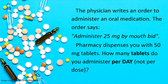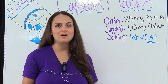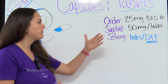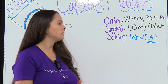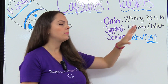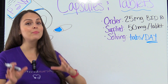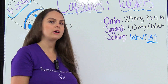Our next problem says the physician writes an order to administer an oral medication. The order says administer 25 milligrams by mouth BID. Pharmacy dispenses you with 50 milligram tablets. How many tablets do you administer per day — not per dose? The physician ordered 25 milligrams twice a day — that's what BID means — by mouth, and we're supplied with 50 milligram tablets. Make sure you pay attention to that part of the problem, because if you just solve for tablets per dose, you would get it wrong.